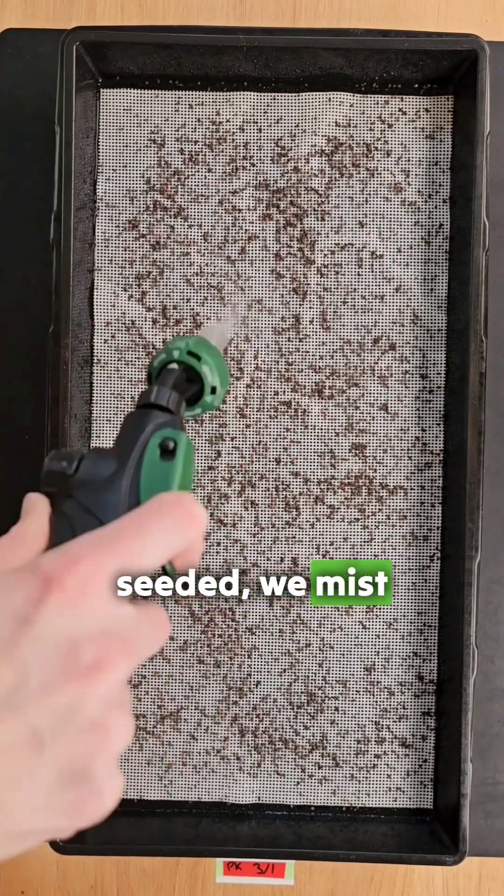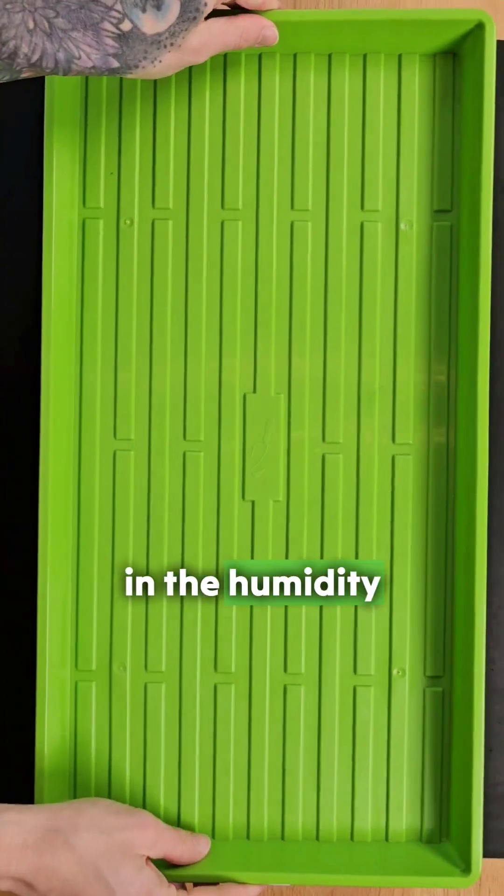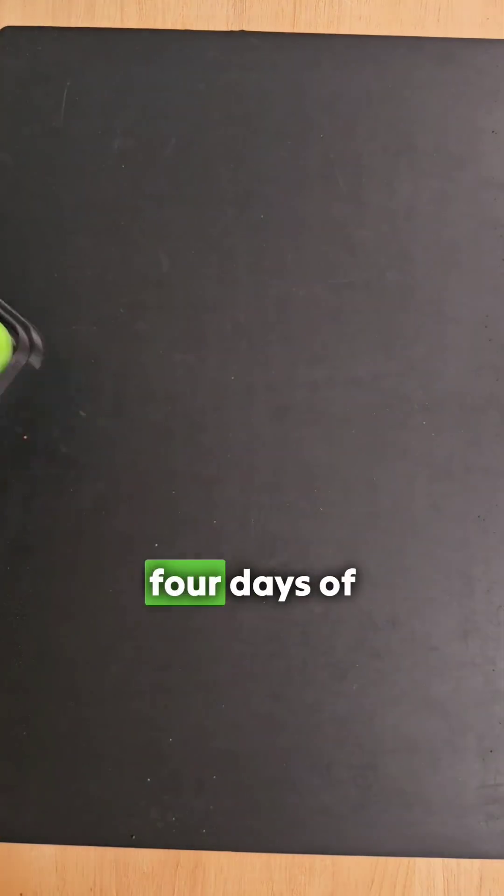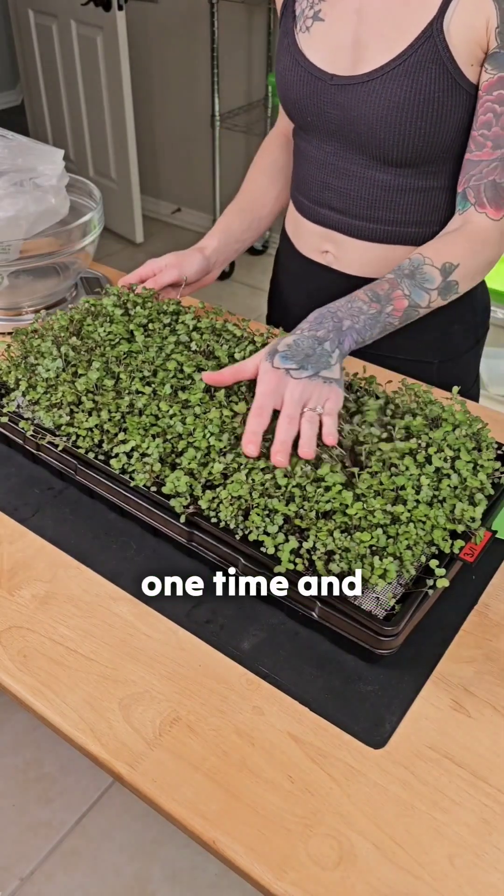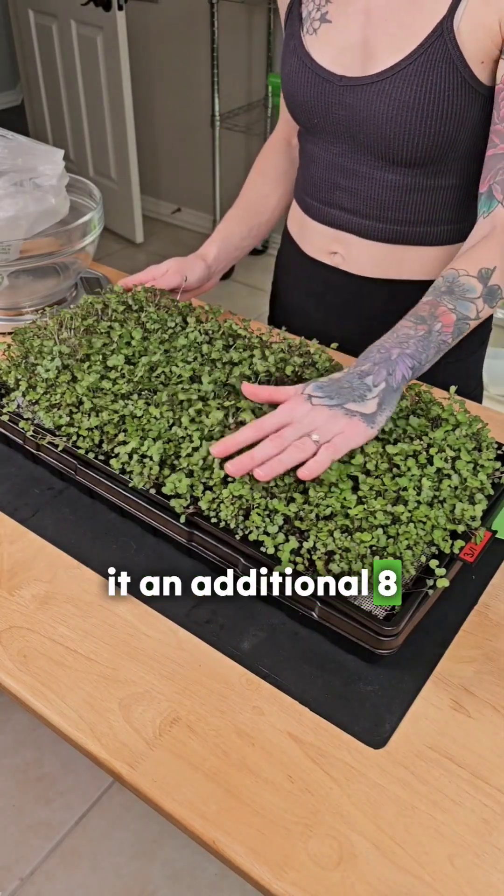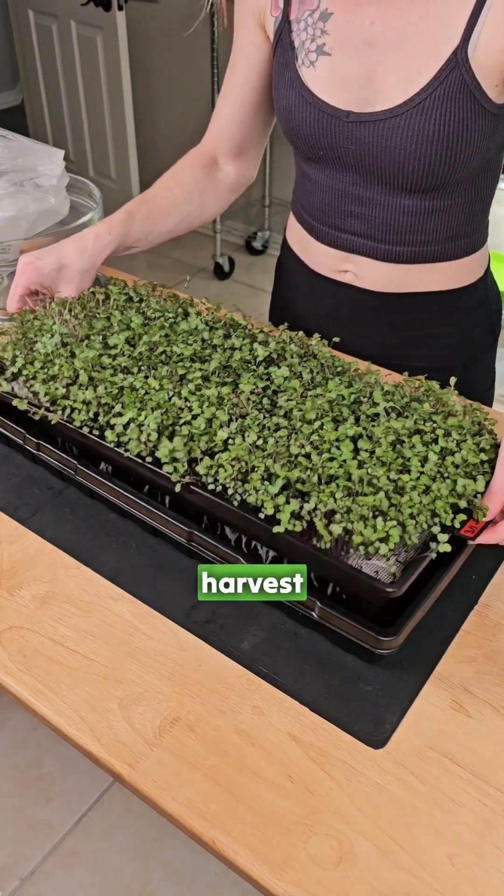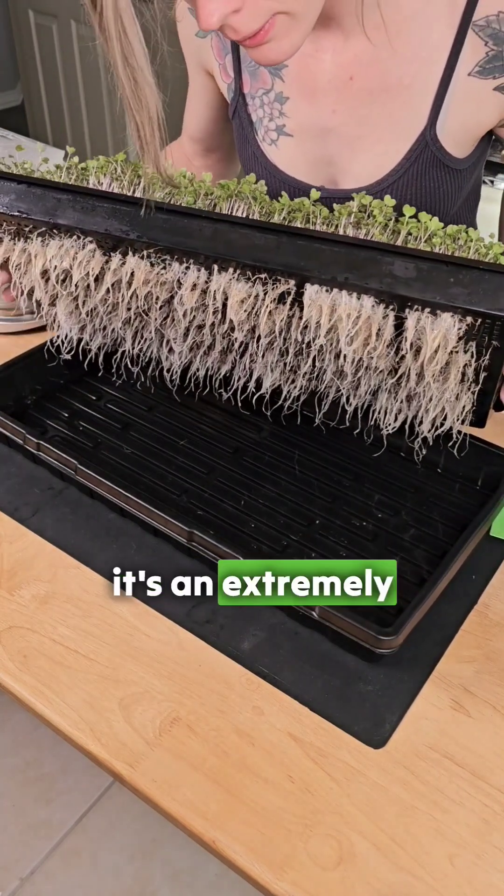Once the tray is seeded, we mist 1-2 times per day and trap in the humidity. After the first 4 days of germination, all we did was fill the reservoir one time. And that's how we made it an additional 8 days without having to do anything but harvest. It's an extremely easy setup.